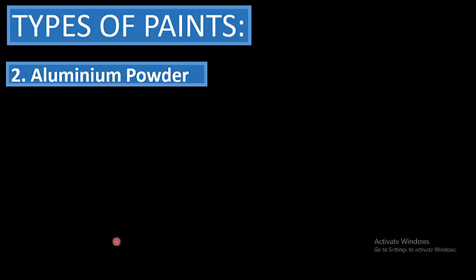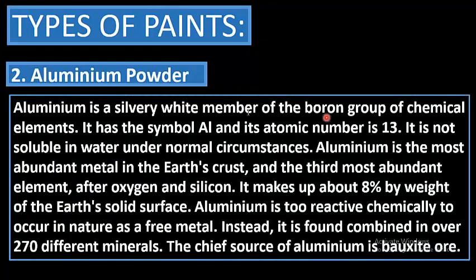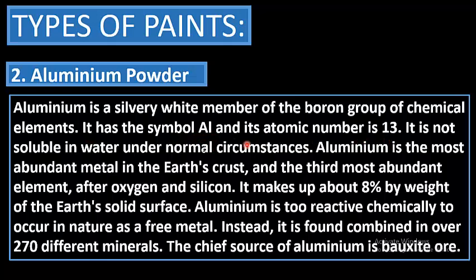Regarding aluminium powder used in aluminium paints: aluminium is a silvery-white member of the boron group of chemical elements with the symbol Al and atomic number 13. It is the most abundant metal in the earth's crust and the third most abundant element after oxygen and silicon, making up about eight percent by weight of the earth's solid surface. Aluminium is too reactive to occur in nature as a free metal and is found in over 270 minerals; the chief source is bauxite ore.